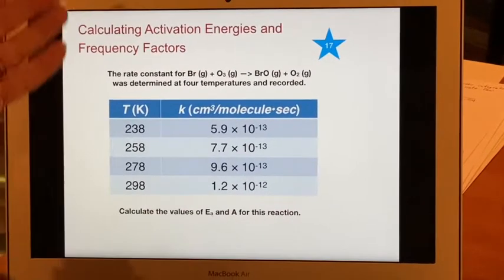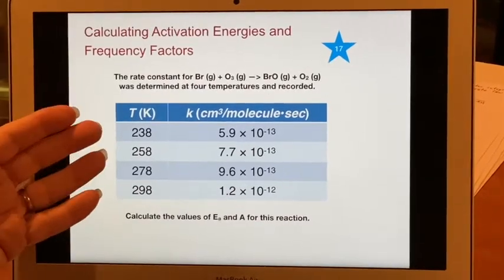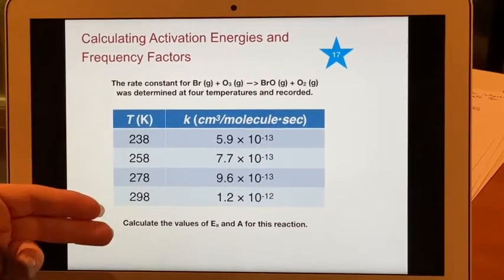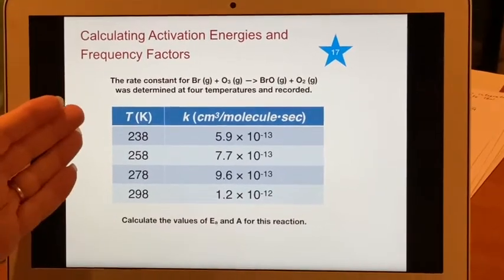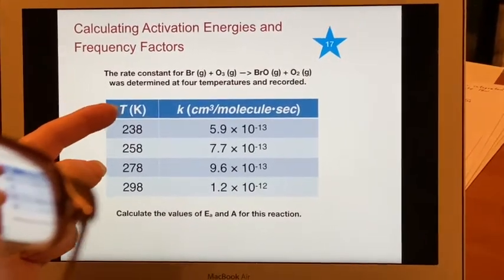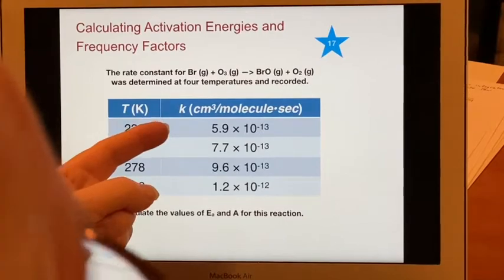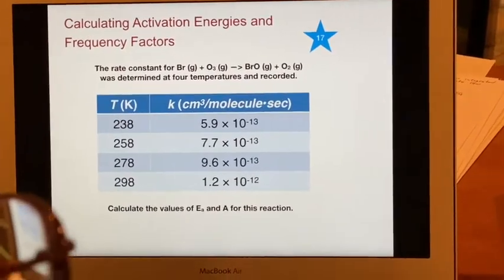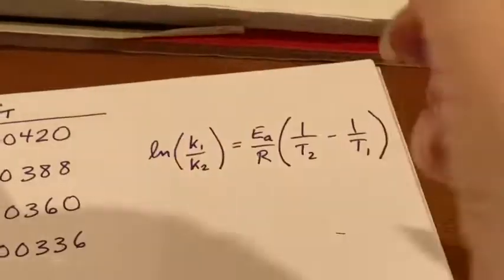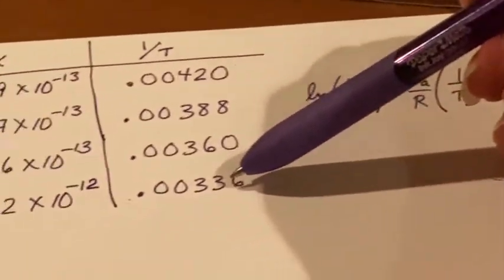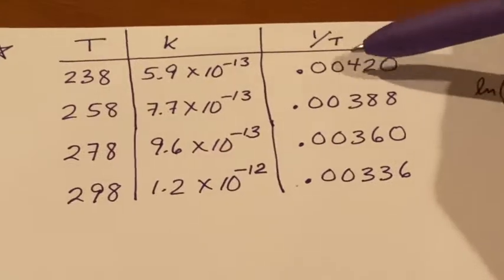Here we have another thing that we can do from this data that was collected: calculate the values for E sub a and A for this reaction. They've given us T and k, and we know that the formula that we use is actually treating one over T. So I've added another column that is the value of one over T.